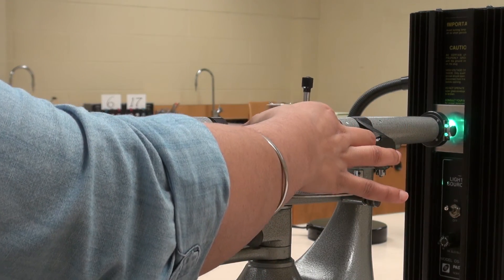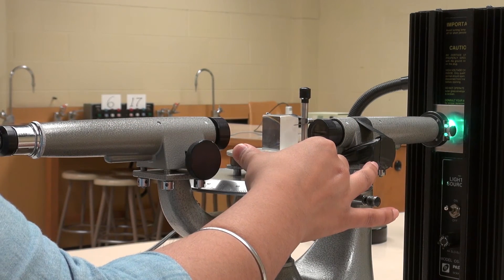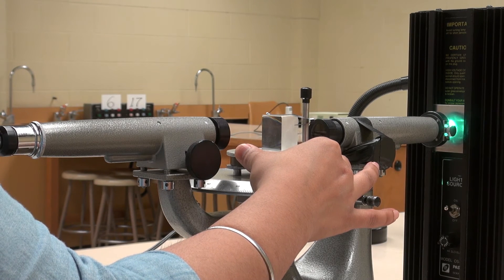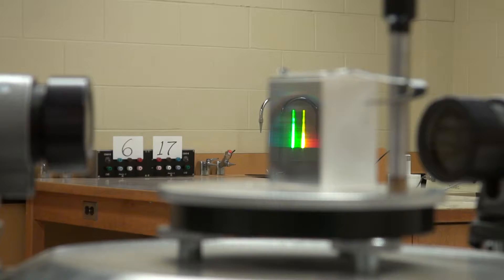Now place the prism on the spectrometer table so that the light passes through the prism. Ensure that the frosted side of the prism is against the post of the prism table.